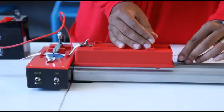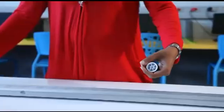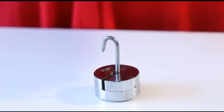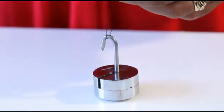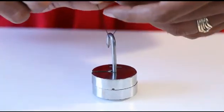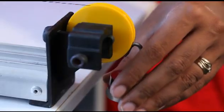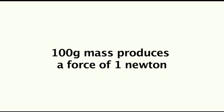To the front end of the trolley attach a thread of cotton and feed it over the pulley. With the trolley at the ticker timer end of the rail and the thread of the cotton over the pulley, attach a mass of 100 grams to the end of the cotton. 100 gram mass produces a force of 1 newton.